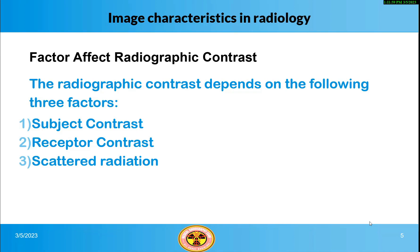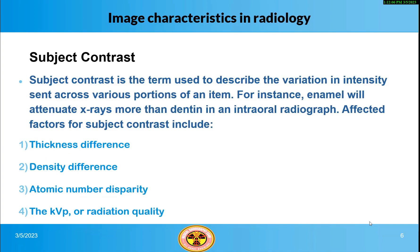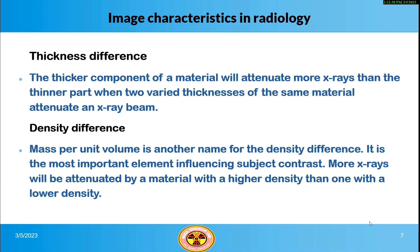Subject contrast is the term used to describe the variation in intensity sent across various portions of an item. For instance, enamel will attenuate x-rays more than dentin in an intraoral radiograph. Factors affecting subject contrast include: thickness difference, density difference, atomic number disparity, and the kVp or radiation quality. The thicker component of a material will attenuate more x-rays than the thinner part when two varied thicknesses of the same material attenuate an x-ray beam.